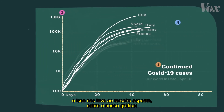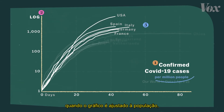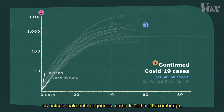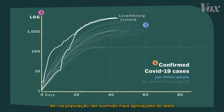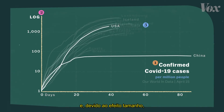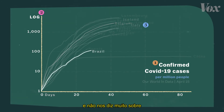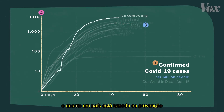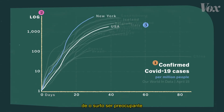Which brings us to the third thing to know about our chart: it doesn't account for population size. When you adjust for population, really small countries like Iceland and Luxembourg appear to have the biggest outbreaks for their size, which may reflect higher testing rates. The U.S. and China have much bigger populations, so their curves drop a bit. But the size of a country doesn't really affect the growth rate of its cases, and it doesn't tell us much about how much the country is struggling. It just pushes smaller countries up on the chart and tends to hide the fact that the outbreak is especially bad in certain regions of bigger countries, like the state of New York.